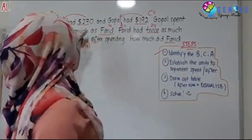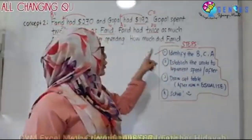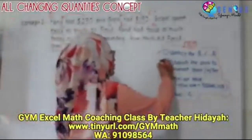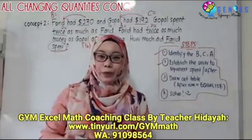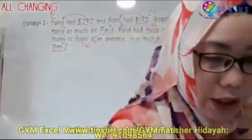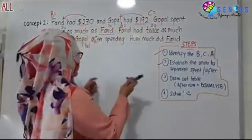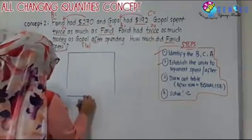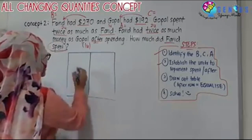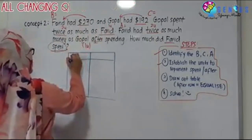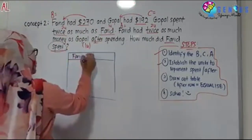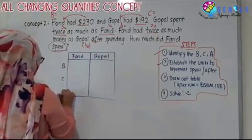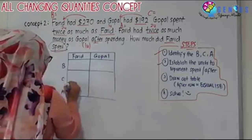We have already identified the BCA and established the units. Gopal spent two units; Farid spent one unit. After spending, Farid has two units and Gopal has one unit. Now we draw out the All-Changing Quantity table. There will be two columns — the first person is Farid, then Gopal — and rows for B, C, and A.